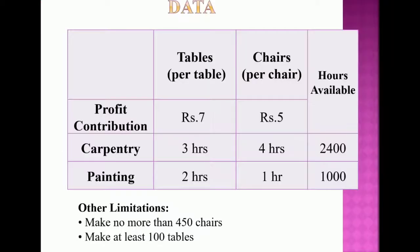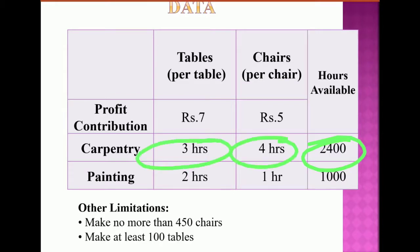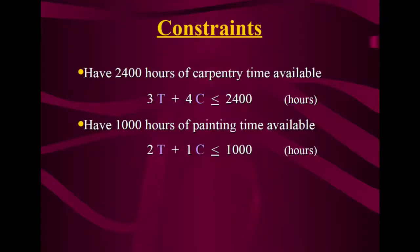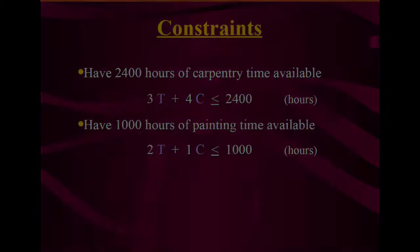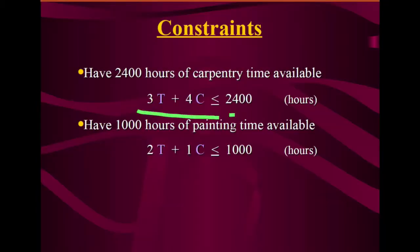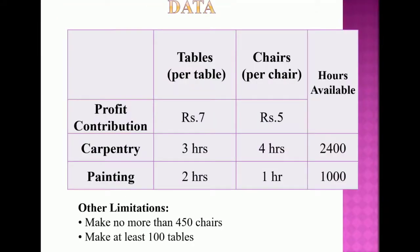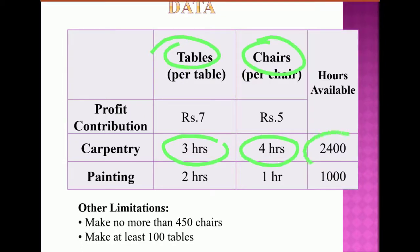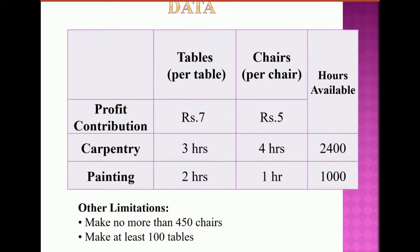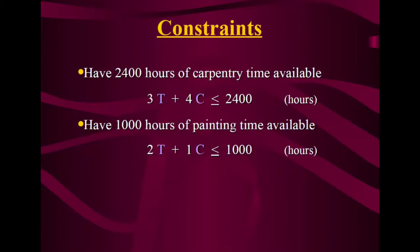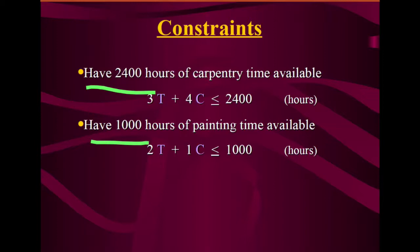Now for the constraints. You have 2,400 man-hours of carpentry time available. Each table takes 3 hours and each chair takes 4 hours, so the first constraint is: 3T + 4C ≤ 2,400. For painting, only 1,000 hours are available, giving us the constraint: 2T + C ≤ 1,000.